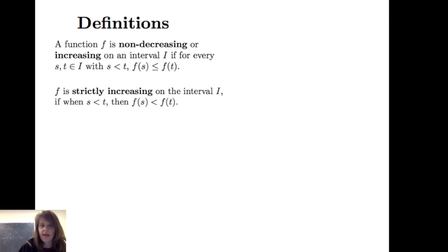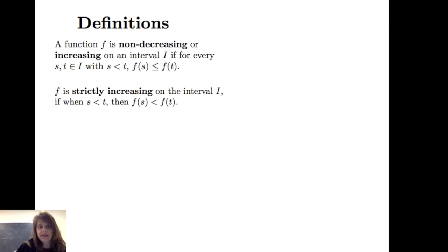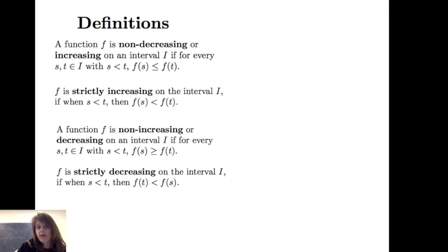If I want to eliminate places where there might be a flat portion on the graph, f is strictly increasing on interval I when s is less than t implies f of s is strictly less than f of t. A function f is non-increasing or decreasing on interval I if for every s and t with s less than t, f of s is greater than or equal to f of t.